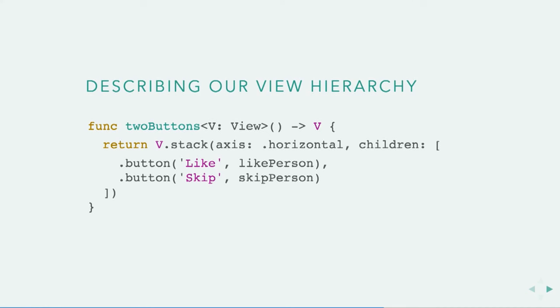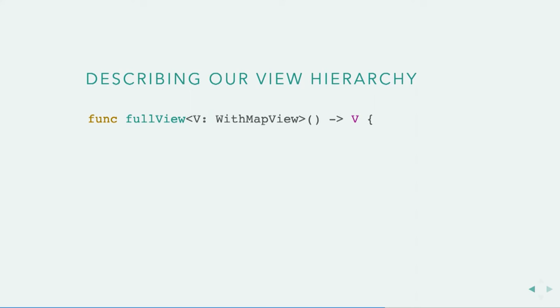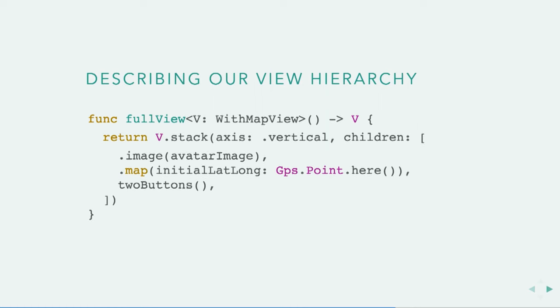So we can just make a stack view, and inside there we can make the two buttons. Swift is smart enough to infer that when you say .button in this context, you mean invoke the static method on the V generic type. Then for the rest of the view, V is no longer just a View — it is a WithMapView View. Because WithMapView is also a View, we can still make a stack view, but we can also make a map along with the image and the two buttons. We can just stick functions in here, which is great.